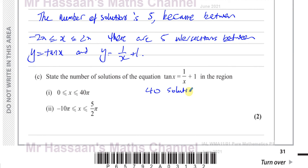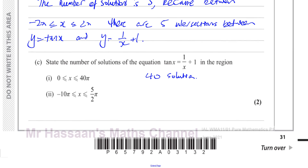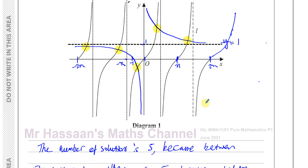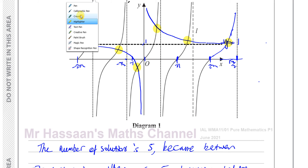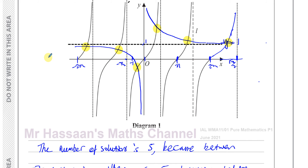For part 2, between minus 10 pi and 5 pi over 2: now 5 pi over 2 is pi over 2 more than 2 pi, so it's where the next asymptote is, giving one more intersection there. Between 0 and 5 pi over 2 you're going to have 1, 2, 3 intersections — that's 3.